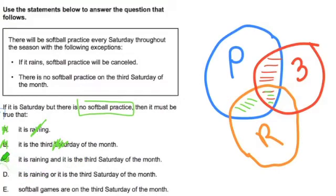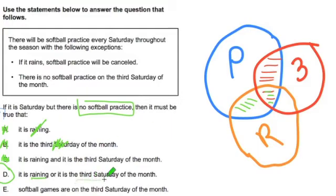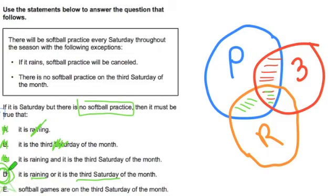Then D here — D is the correct answer. It says it's raining or it's the third Saturday of the month. And that would cover all these areas of no practice. There could be no practice because it's raining — that would be these days — and it could be the third Saturday of the month, and that would be these days and the ones that overlap. So D is the correct answer. And finally, option E says softball games are on the third Saturday of the month — and that's just wrong, it goes against the problem. We cross that one off.